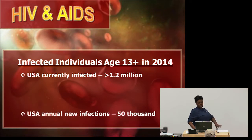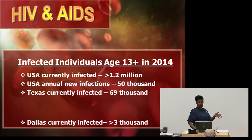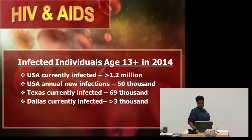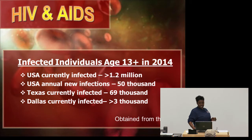In terms of the numbers for AIDS, for individuals ages 13 and over as of 2014: in the USA, there are over 1.2 million individuals currently infected, with 50,000 annual new infections. In Texas, there are currently 69,000 infected. In Dallas, there are over 3,000 individuals over 13 years old currently infected. This data was obtained from the CDC.